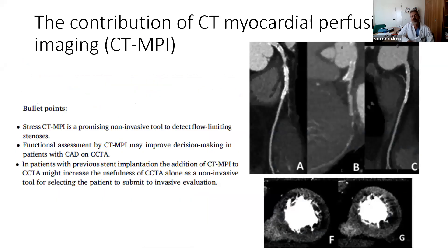We then covered stress perfusion imaging, which should be particularly useful in patients with prior stent implantation, where CTA alone may have some drawback in terms of interpretation due to blooming artifacts. The integration between anatomy and function can help the interventionalist select patients to submit to invasive evaluation and potentially PCI.